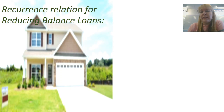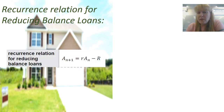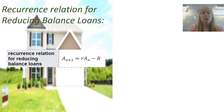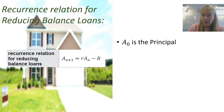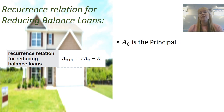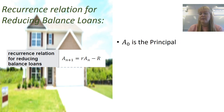Let's talk about the recurrence relation for a reducing balance loan — this is going to be on your QCAA formula sheet, so one less thing to memorise. Let's unpack what the different terms mean. A₀ is not shown in the recurrence relation itself, but after writing it you would add a comma and write A₀ equals the value of the principal. A₀ basically means the amount owed at time zero — that's our principal, our starting amount.